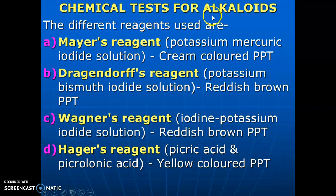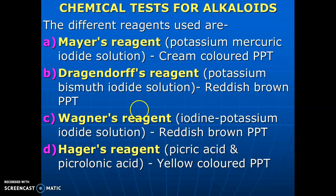Chemical tests used for identification of alkaloids: Mayer's reagent — potassium mercuric iodide solution — gives a cream-colored precipitate. Dragendorff's reagent — potassium bismuth iodide solution — gives a reddish-brown precipitate. Wagner's reagent — iodine-potassium iodide solution — gives a reddish-brown precipitate. Hager's reagent — picric acid and citric acid — gives a yellow-colored precipitate.